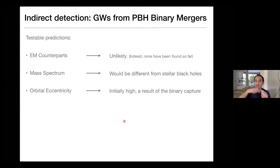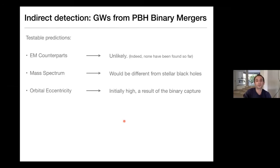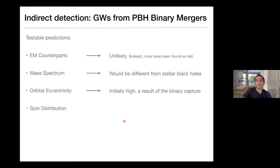With LIGO, which can only detect the last few cycles of the inspiral before the merger, there's not much hope to detect the eccentricity in all events. But there may be some events with initial eccentricities high enough that LIGO can see traces of eccentricity in the initial inspiral cycles it observes. Future experiments that can see more of the inspiral stage will definitely be able to detect this eccentricity.